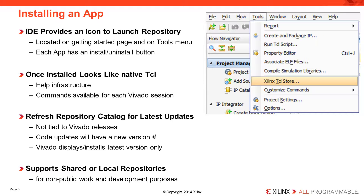Each app has an Install button beside it. When you install an app, the commands in the app are now available at the Tcl command prompt just like built-in commands. You can use the Help command to get basic information about the command such as description, arguments, and what it returns. Commands in an installed app are persistent, which means every time you launch Vivado, the apps remain installed and functional. There is a refresh mechanism for the repository catalog — when a developer has an updated version, they can publish it independently of Vivado release schedules, and an upgrade button will appear next to it in the repository view.